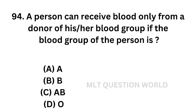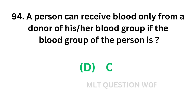Question number 94: A person can receive blood only from a donor of his or her own blood group if the blood group of the person is. Option A: A group. Option B: B group. Option C: AB group. Option D: O group. That means which blood group strictly needs the same blood group? The correct answer is Option D, O group — O group individuals strictly need their own blood group.